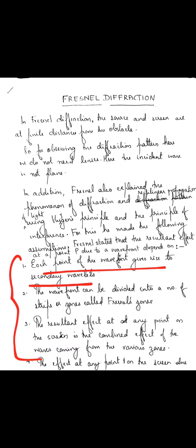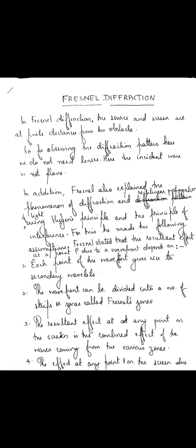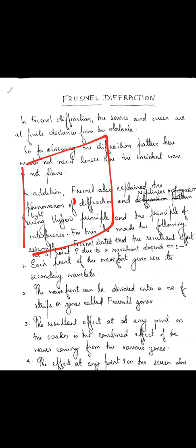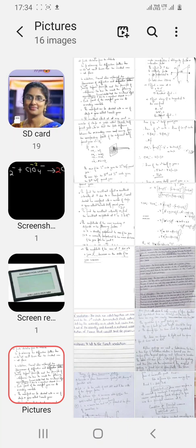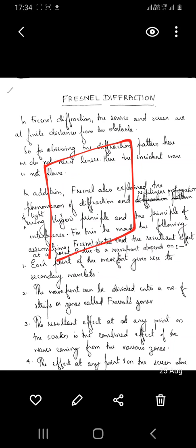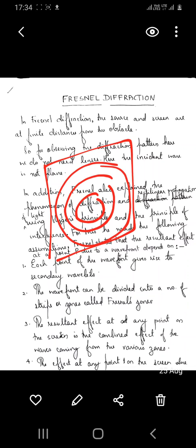The first assumption is that each point on the wavefront gives rise to secondary wavelets — that is a part of Huygens' principle. The second assumption is that every wavefront is divided into a number of zones called Fresnel zones. A plane wavefront is divided into a number of strips, called Fresnel's half-period zones.